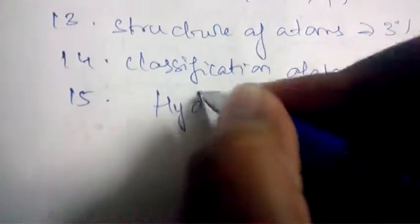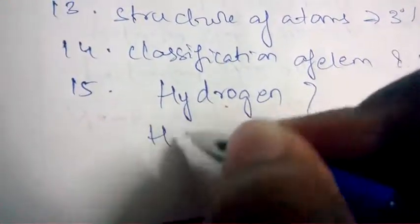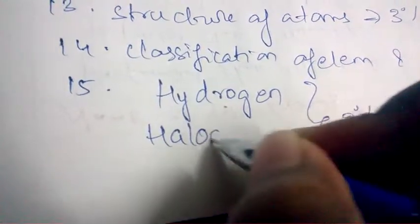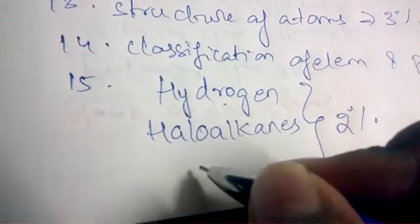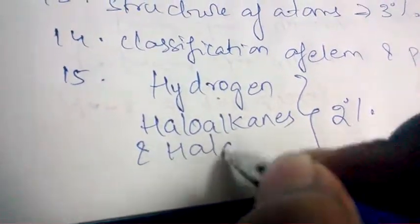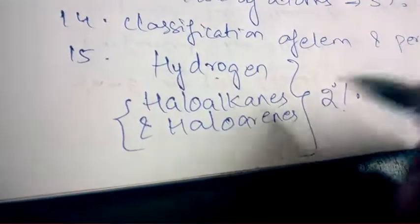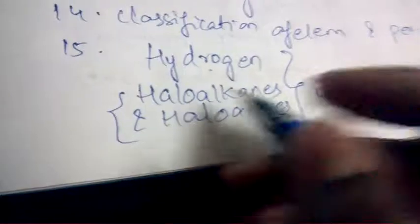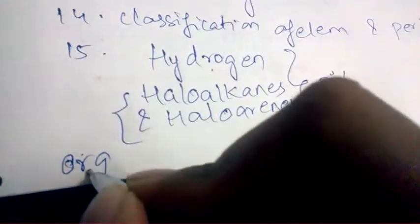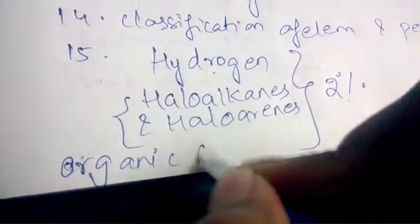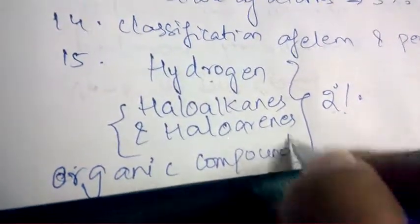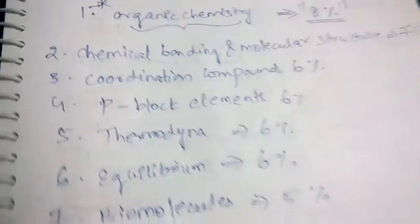The three chapters with 2% weightage are: hydrogen, haloalkanes and haloarenes — each having 2% weightage — and last but not least, organic compounds, which also has the least weightage of 2%. So these are the chapters with their respective weightage.